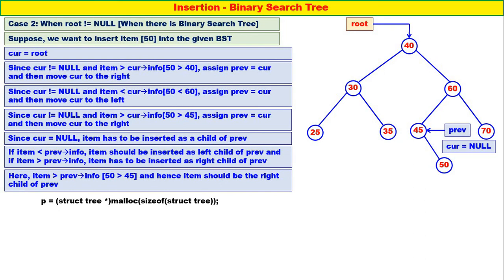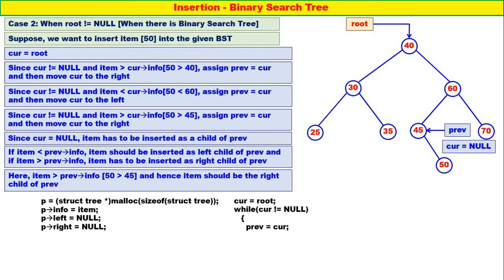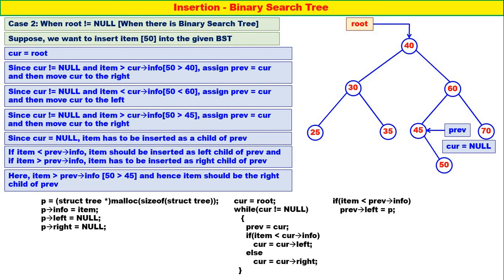Let us write the code. Getting a new node. P of info is equal to item. P of left null. P of right null. Kerr is equal to root. Next, while kerr is not equal to null: priv is equal to kerr. If item is less than kerr of info, move to the left; otherwise move to the right. And if item is less than priv of info, the child should be the left child of priv; otherwise it should be the right child of priv. And last, return root.